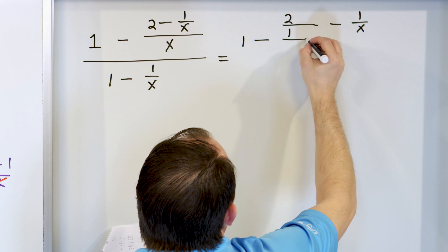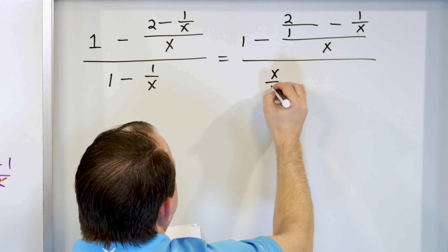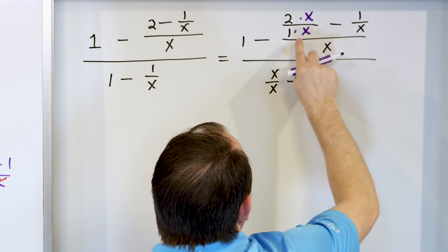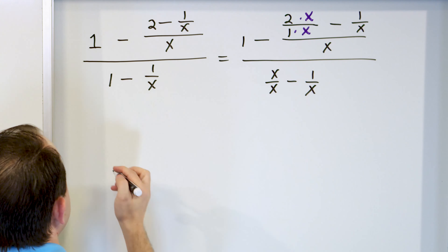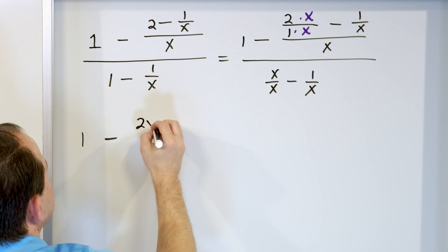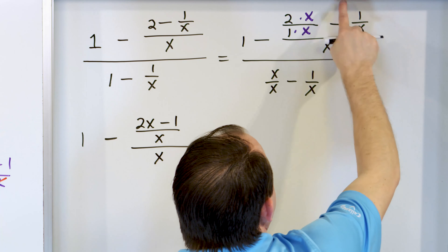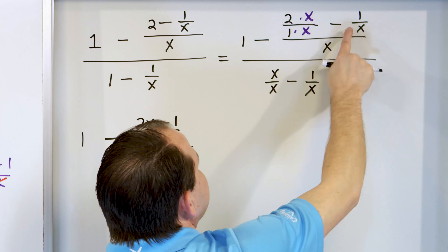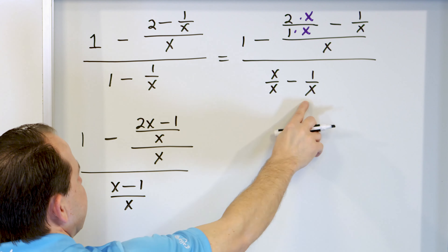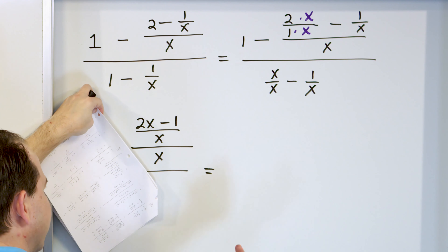Start by simplifying the innermost fraction: 2 over 1 minus 1 over x. Write 2 as 2x/x to get a common denominator, giving (2x-1)/x. That whole thing is divided by x. In parallel, work on 1 minus 1/x, writing 1 as x/x, giving (x-1)/x. We have the 1 minus sitting out in front — we're not touching that yet. After getting common denominators, the top numerator is (2x-1)/x divided by x, and the bottom is (x-1)/x.